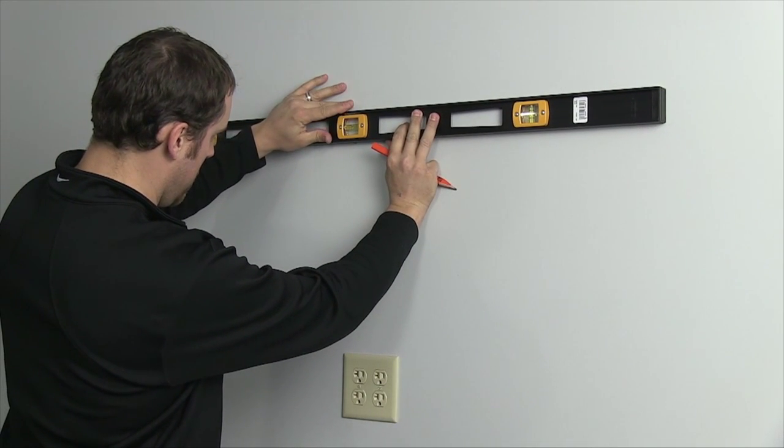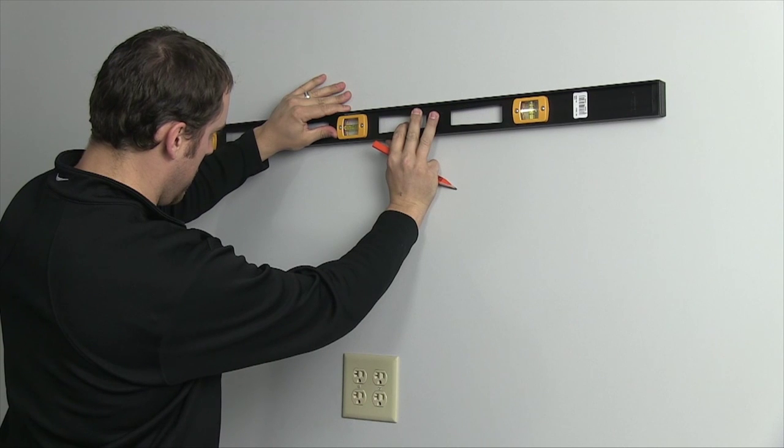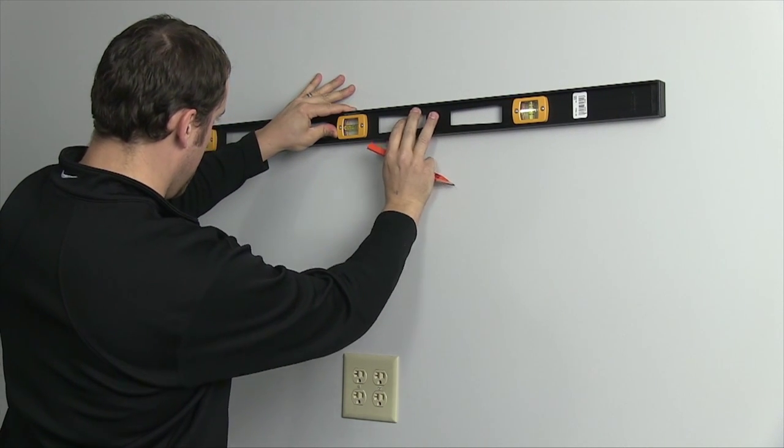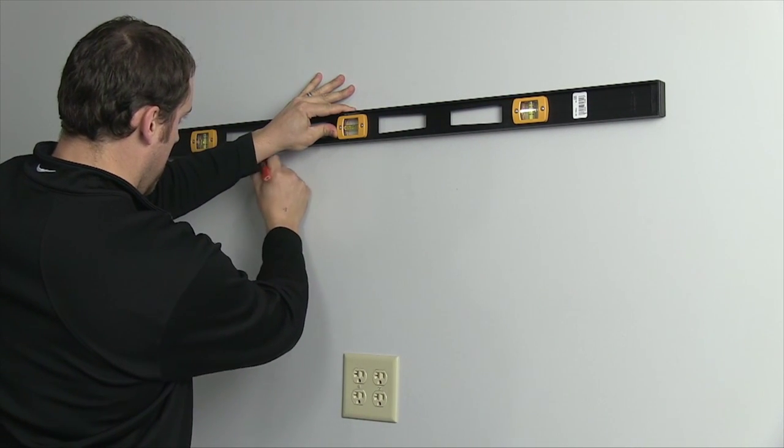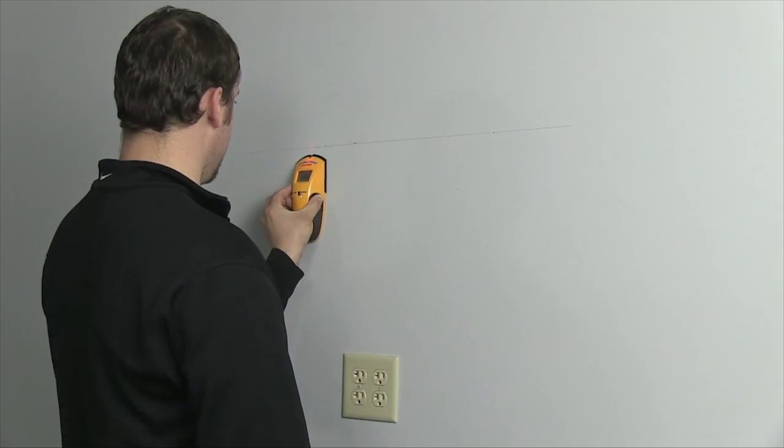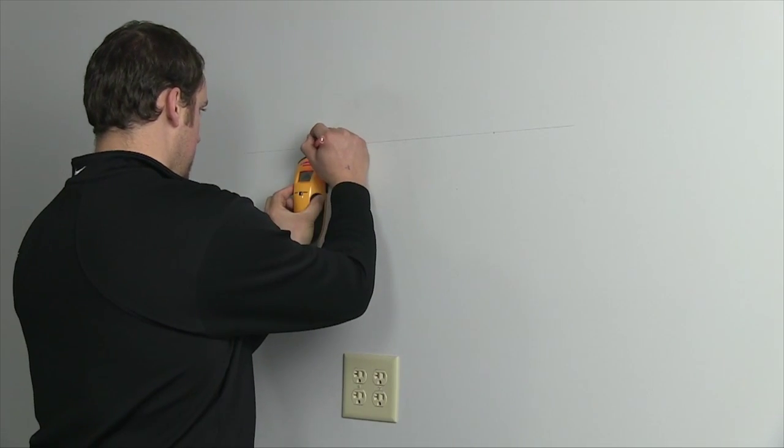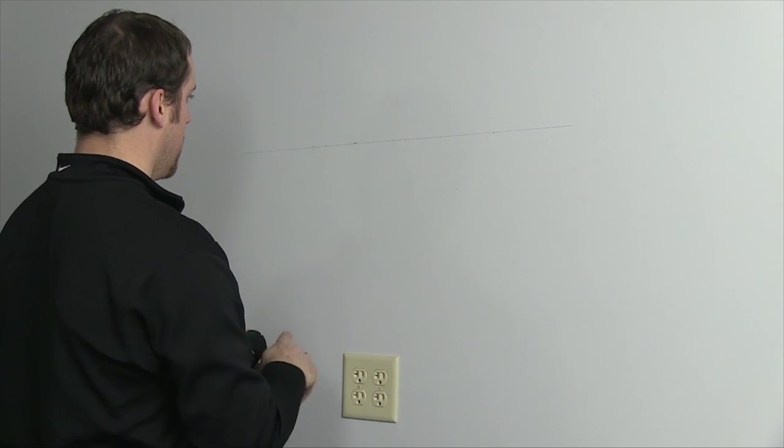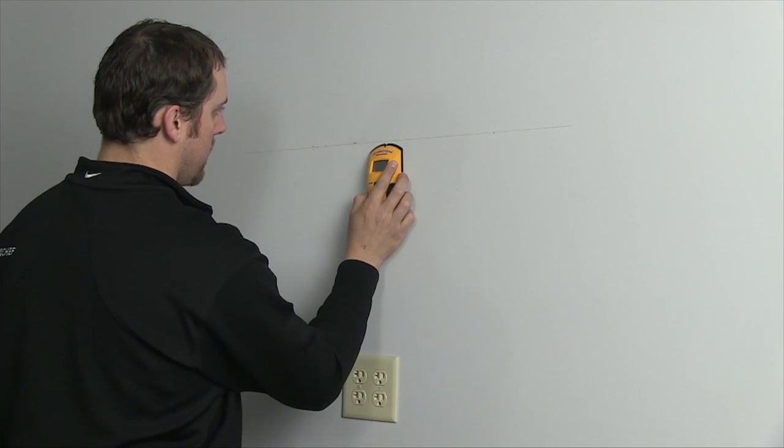Draw a level line across the upper mounting point locations. Slide the stud finder out from the area above the outlet to locate the nearest adjacent studs to the left and right.